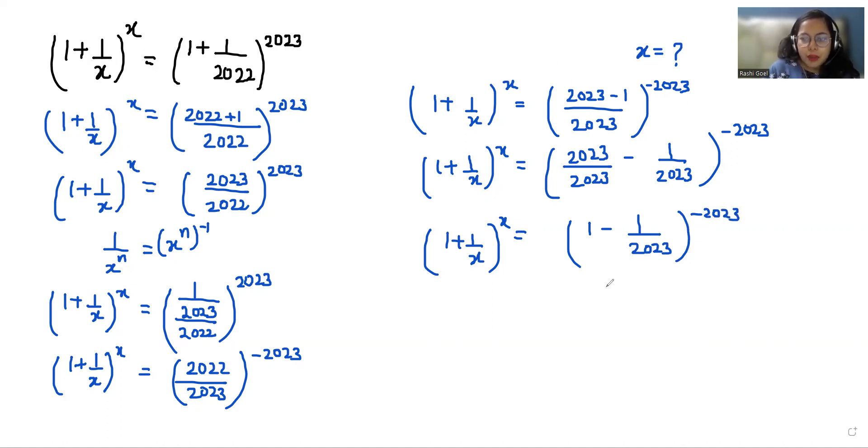Now if we compare both sides, the value of x is -2023 because of this negative sign, this plus is converting to negative. So the final value of x is -2023.